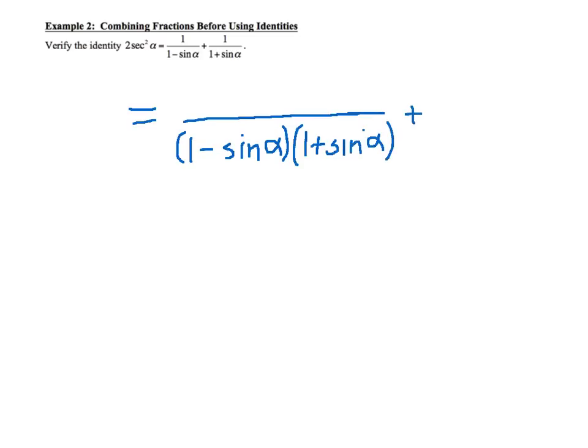And so what's going to happen is we're missing one of these parentheses in each fraction. So the first fraction right here is missing a 1 plus sine of alpha. So we're going to have to multiply the top by 1 plus sine of alpha.